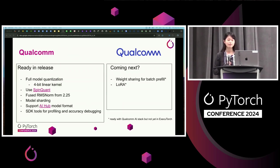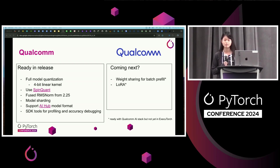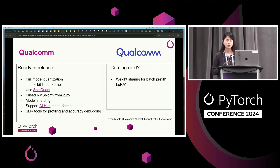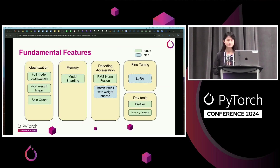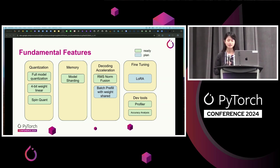Qualcomm NPU is a powerful unit, and we can quantize the whole model and leverage the 4-bit kernel with the latest quantization algorithm SpinQuant from Meta. RMS norm op is fused. Model sharding is used for running models on memory-constrained devices. AI Hub is a collection of optimized models, and we also support them. Dev tools are also integrated here. What's next? Model sharding for batch prefill will be one, as well as LoRA fine-tuning.